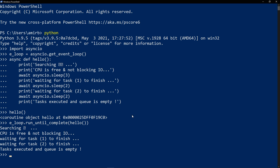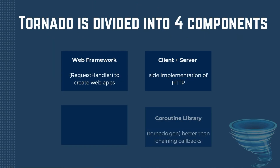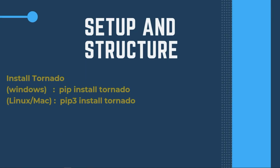Now let's talk specifically about Tornado. It is divided into four components: a web framework using RequestHandler subclasses to create web apps; a client and server-side implementation of HTTP; an asynchronous networking library including IOLoop and IOStream, which are the foundation of the HTTP components; and a coroutine library. It's preferable to use Python's native asyncio. The web framework and HTTP implementation together form a full-stack alternative to WSGI, as implemented in Flask for instance.